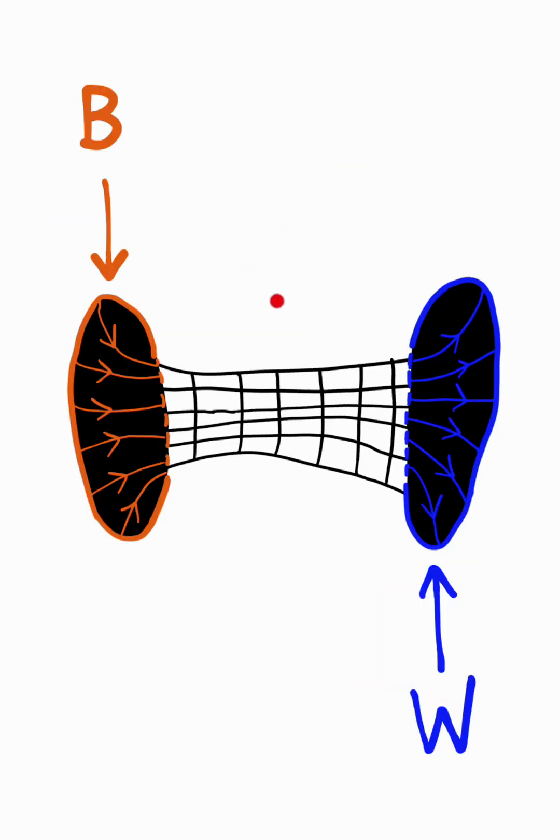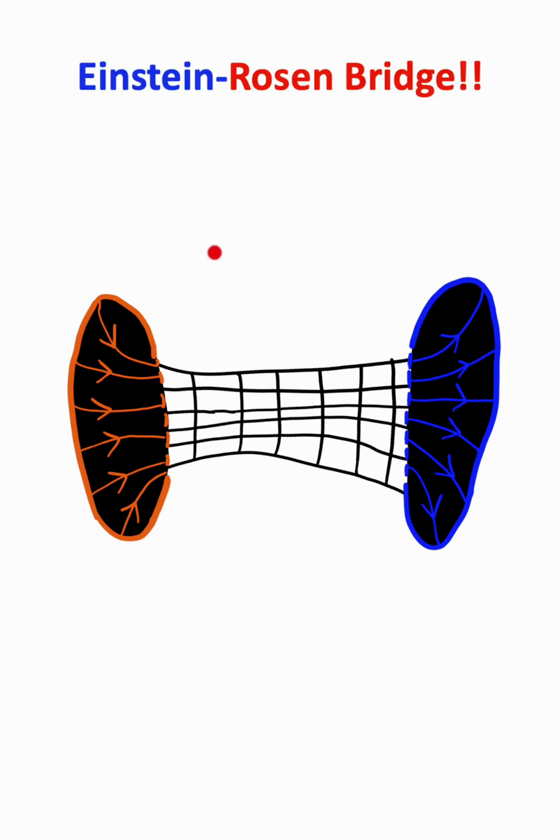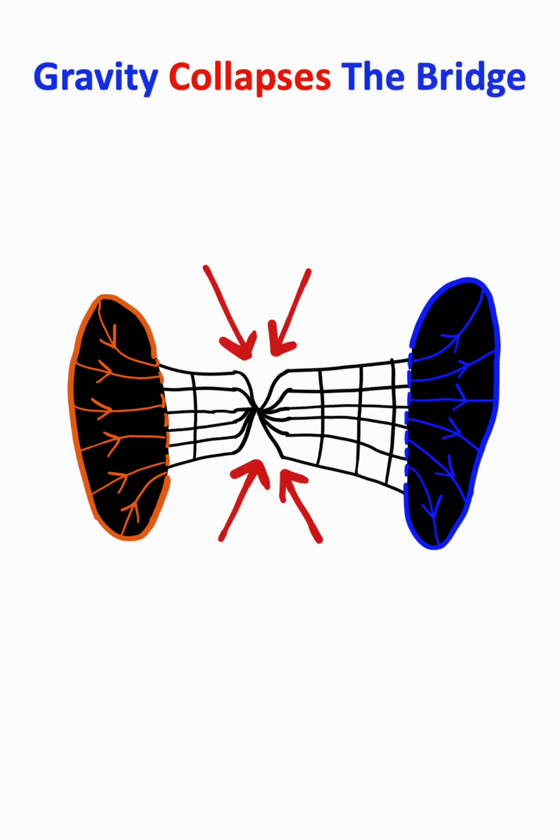This led to the first theorized wormhole known as the Einstein-Rosen Bridge. Now, there are quite a few flaws with this theory in general. First off, it would be impossible to actually cross this wormhole because general relativity shows us that gravity would collapse this bridge before anything could traverse through it.